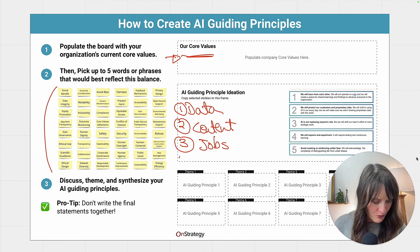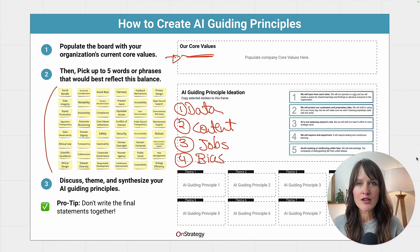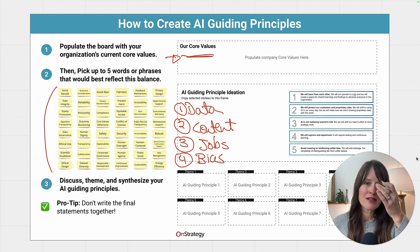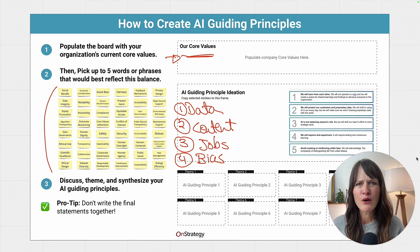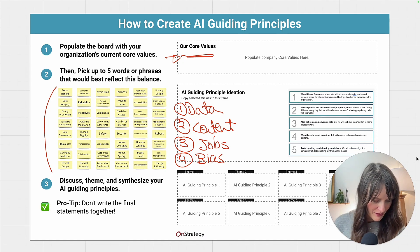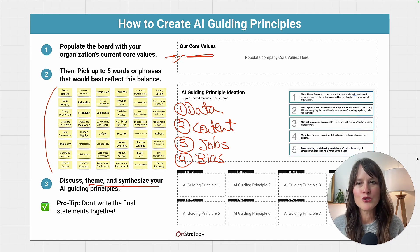The last thing you probably want a guiding principle around is bias. What is a concern right now is that we're forwarding inherent and implicit bias that is in large data sets — we're forwarding that by using AI, and that's certainly not what anybody wants to do. So how are you going to prevent against that? You could easily just ChatGPT 'AI guiding principles,' but that's not the point. The point is to really have a conversation with you and your team to identify themes, synthesize, and build what your guidelines are for your organization.